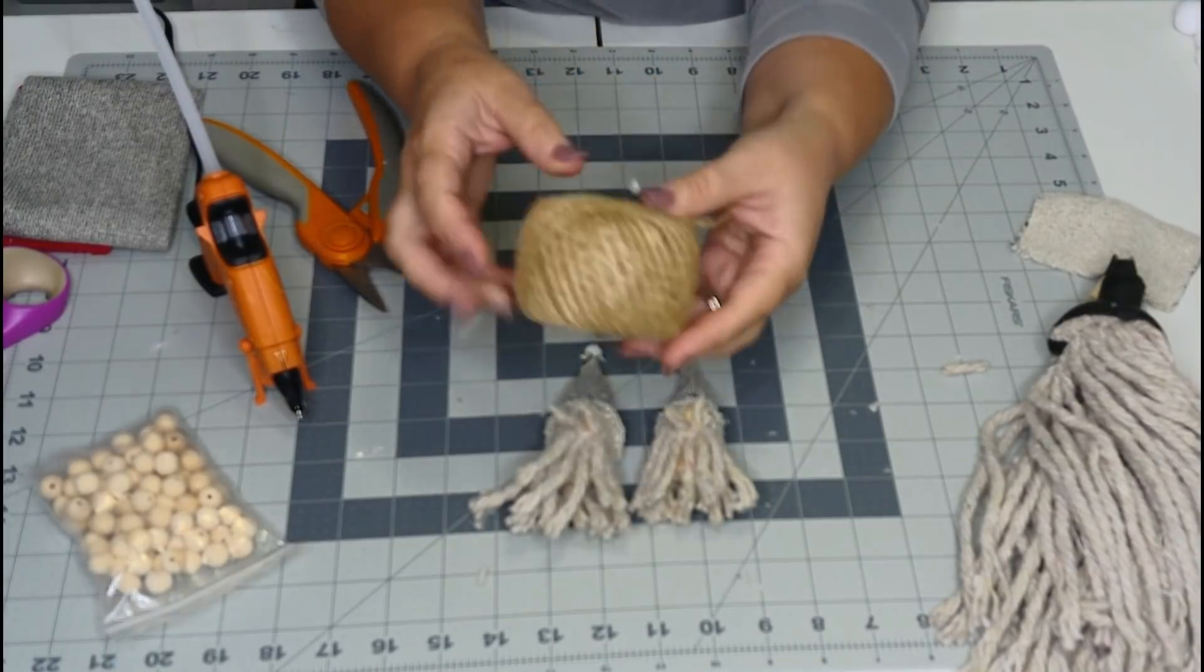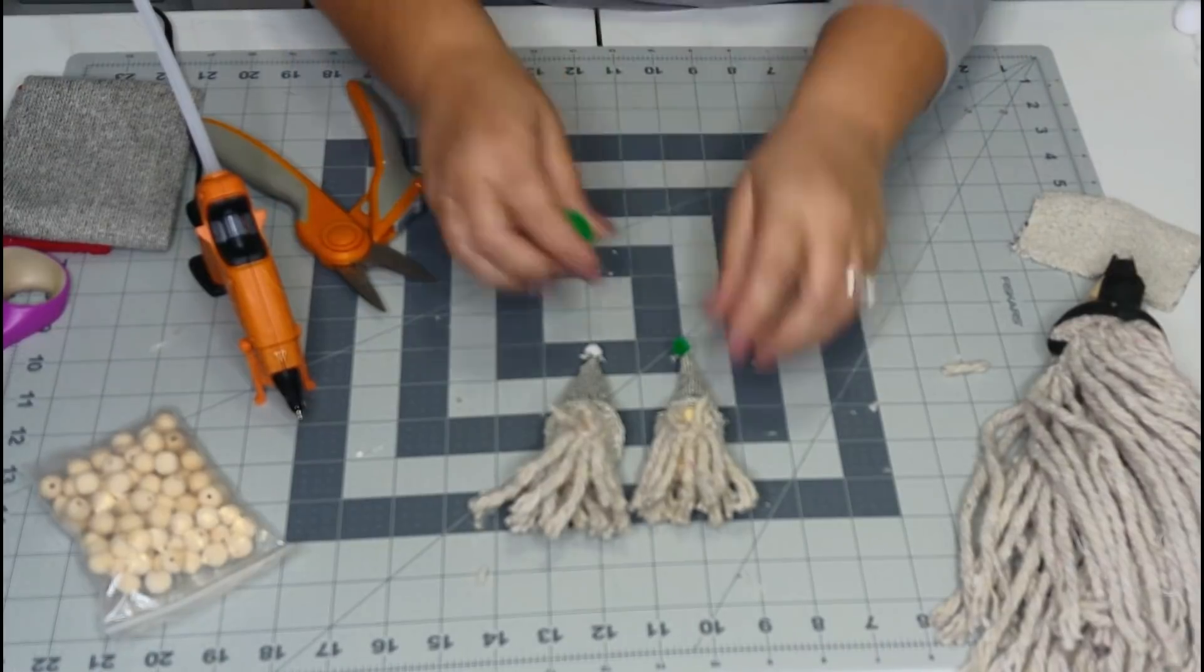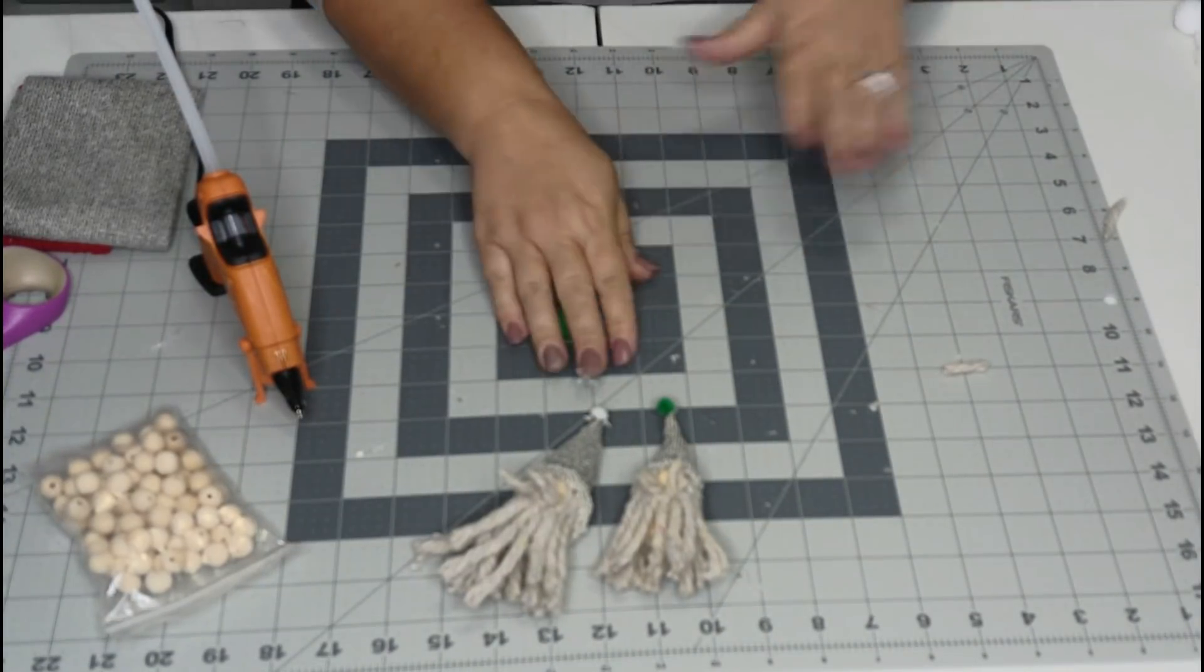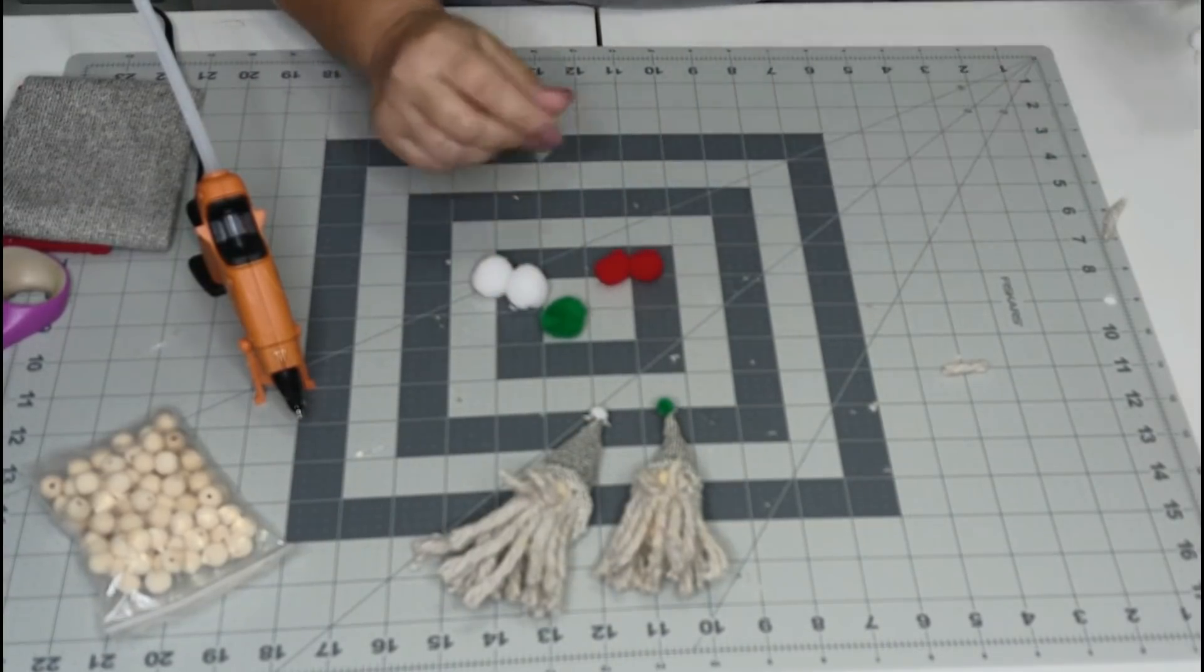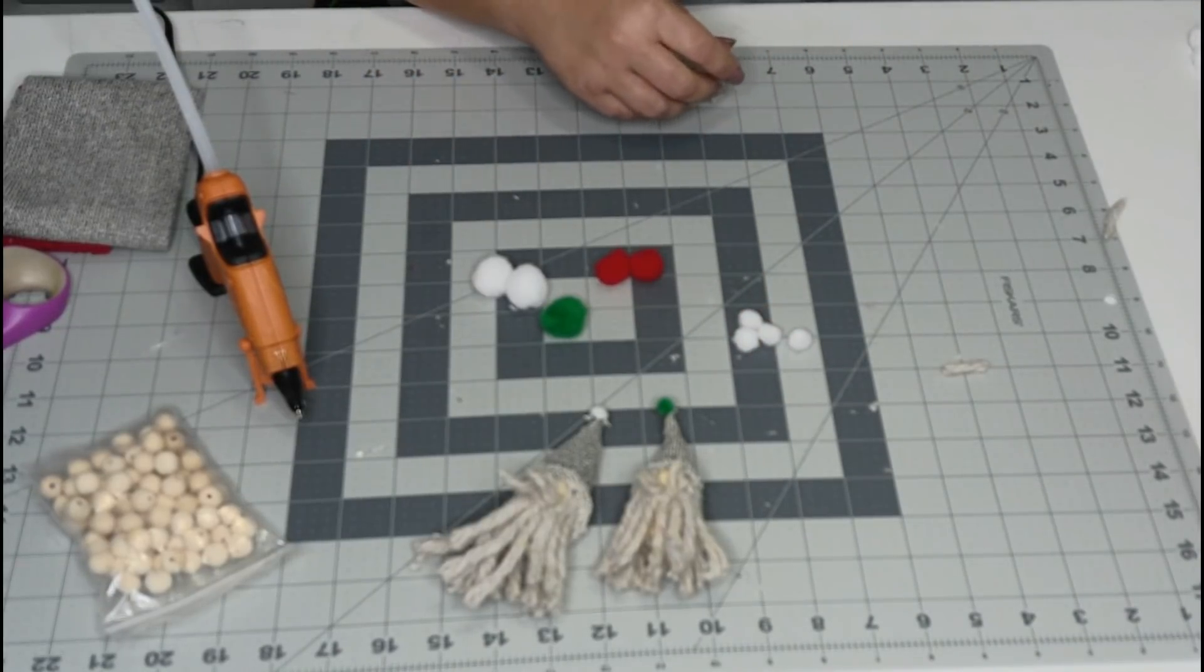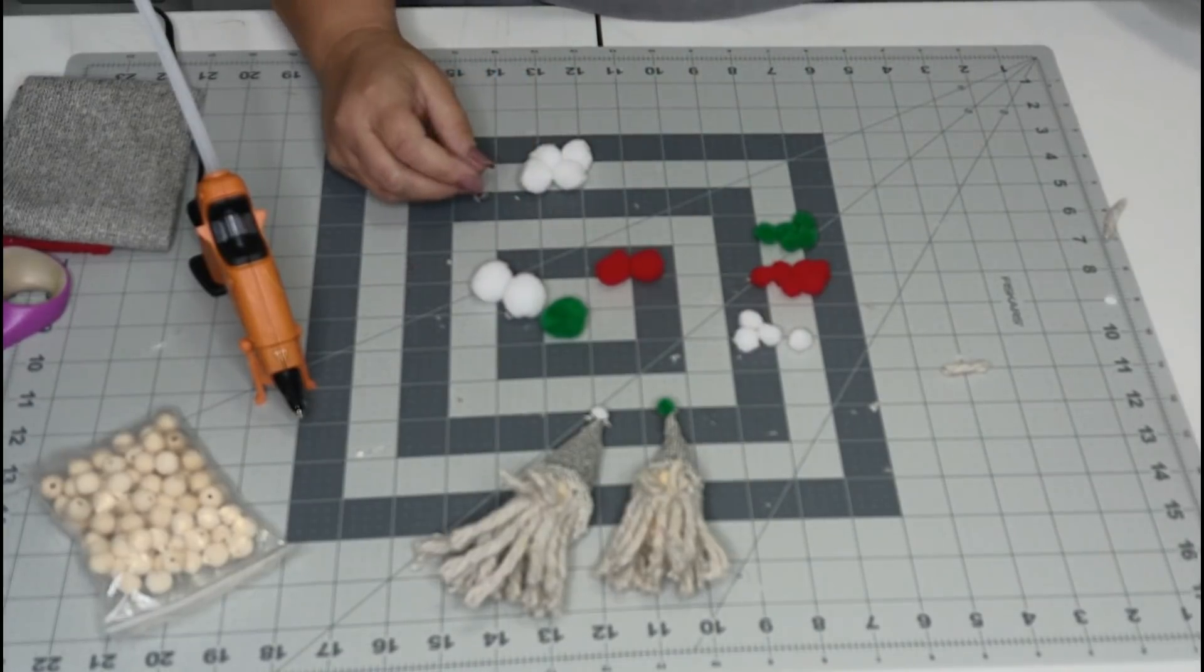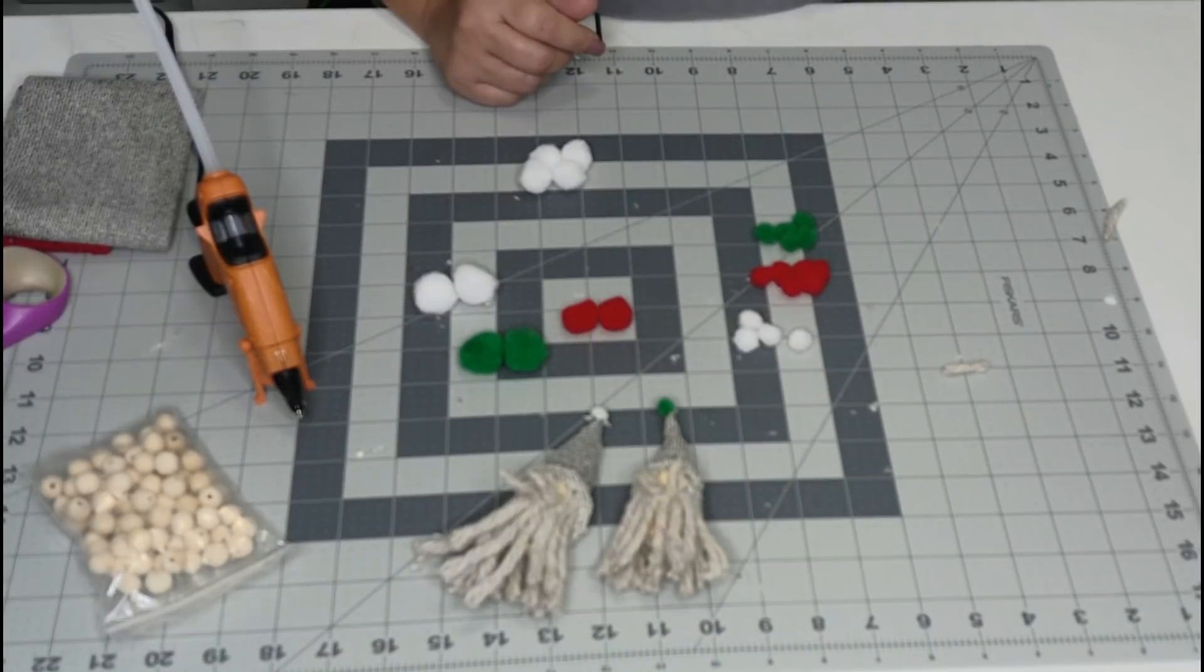So to make this next step happen, we're going to need our jute cord and we're going to need our pom poms. Our pom poms from the Dollar Tree come in red, white, and green all in a little package, and they're all different sizes. I'll put a few on here so you can kind of see the different sizes. I'm thinking I'm going to do a little pattern with these, but I'm not 100% sure what that pattern is going to be.